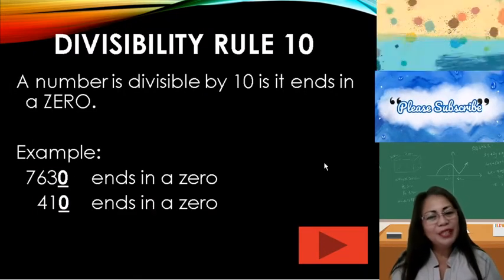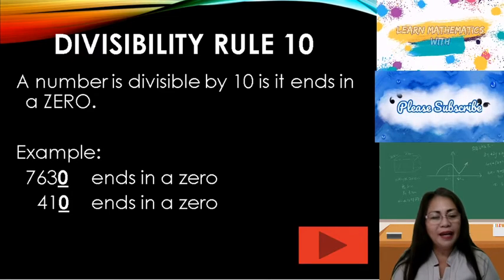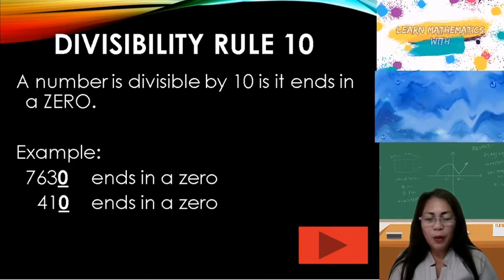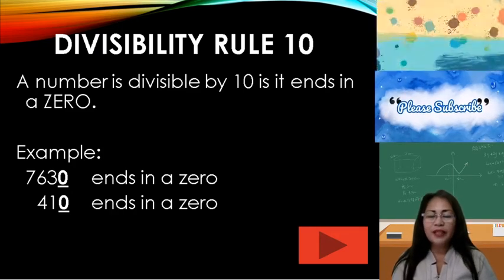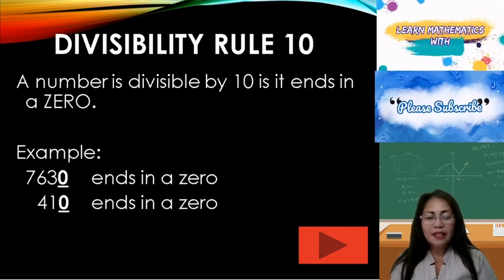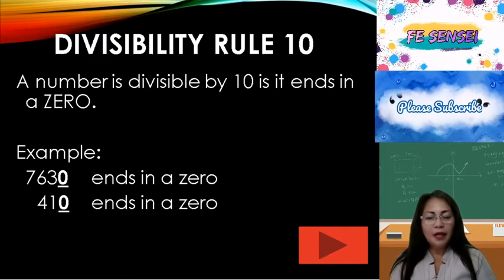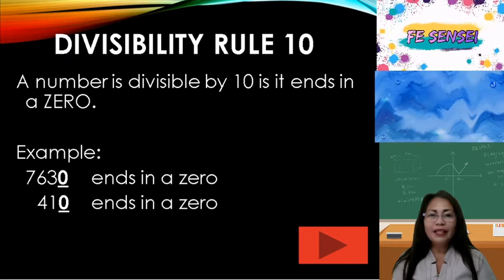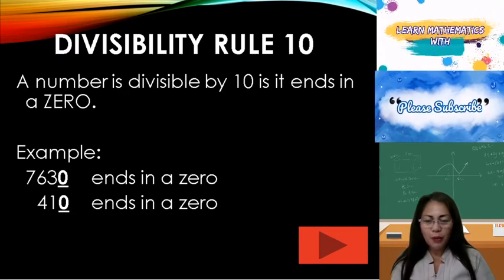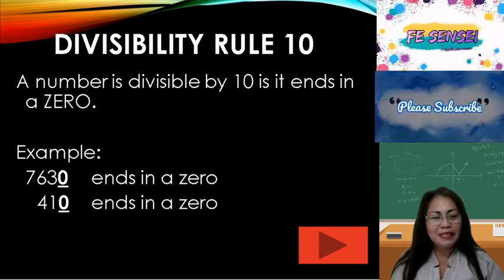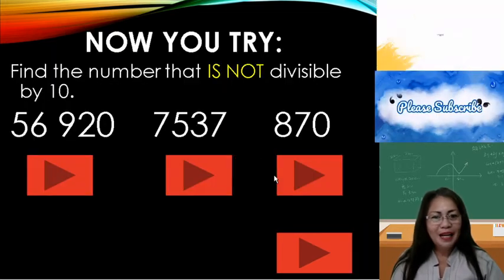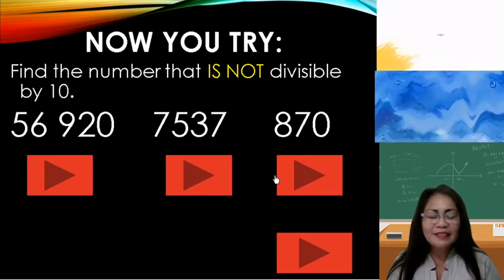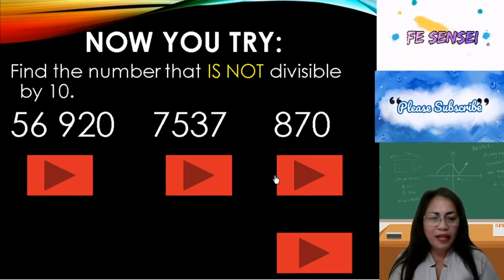Divisibility rule 10: A number is divisible by 10 if it ends in 0. Example: 7,630 — it ends in 0, therefore 7,630 is divisible by 10. Another example: 410 — it ends with 0, therefore 410 is divisible by 10. Let's try. Find the number that is not divisible by 10, or the number that does not end with 0.